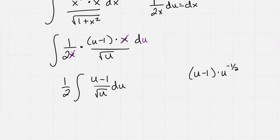So u is just u to the 1, and when you multiply with the same base, you're going to add your exponents. So u times u to the negative 1 half becomes u to the positive 1 half, minus u to the negative 1 half.